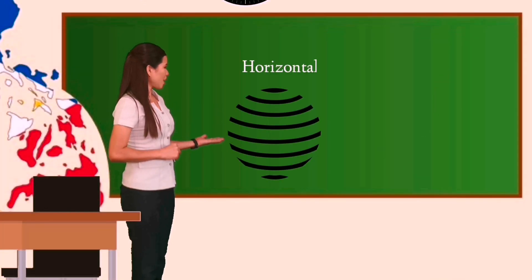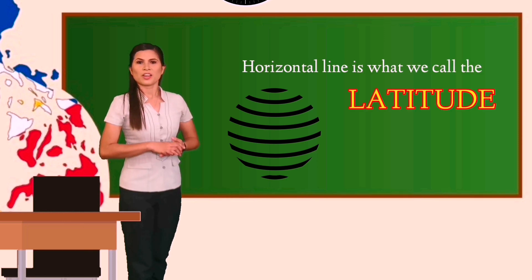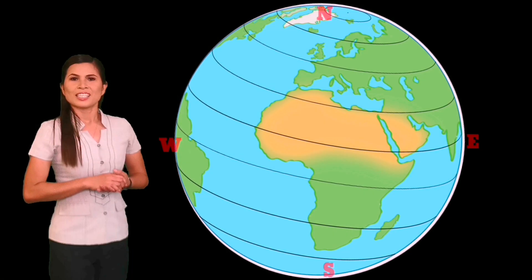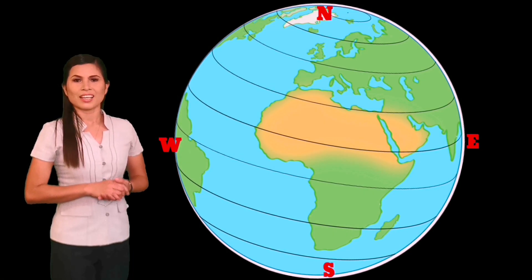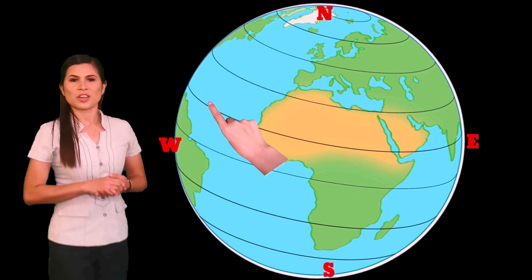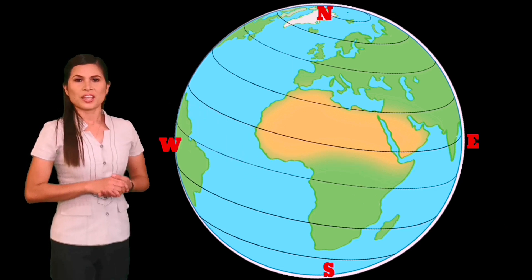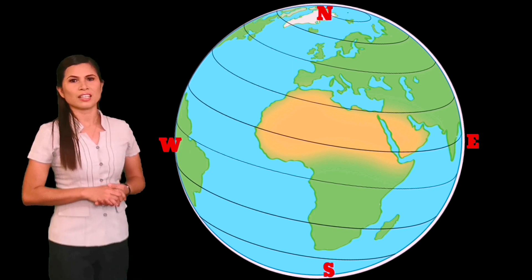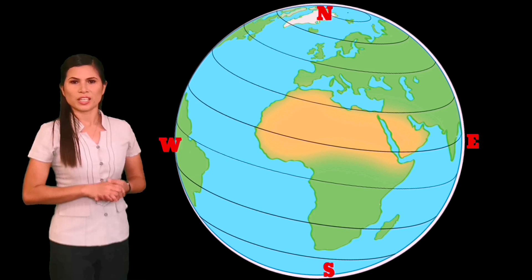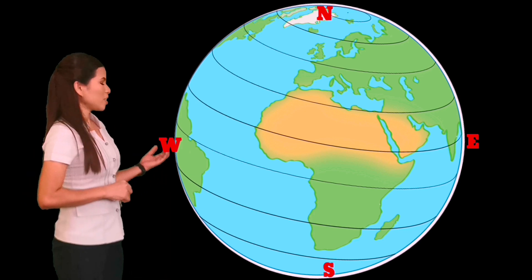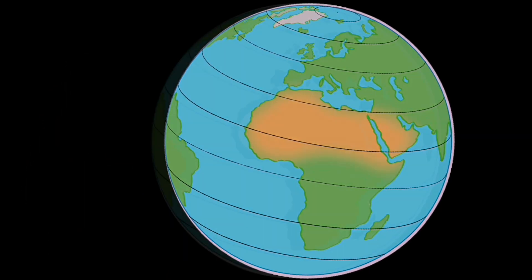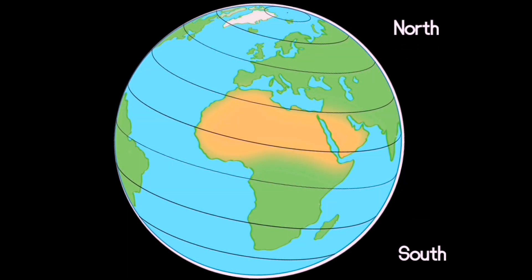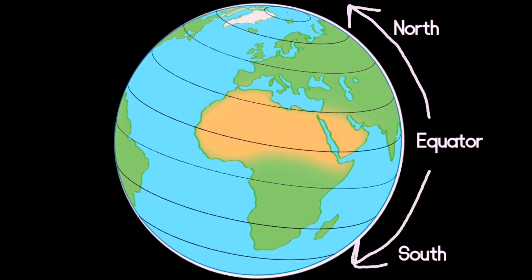The horizontal lines are what we call latitude. Lines of latitude extend east and west across the Earth. These lines are imaginary and are called parallels, and you find a full circle on the surface of the Earth. Latitude is measured both north and south from the equator, and is measured in degrees.